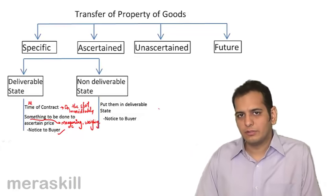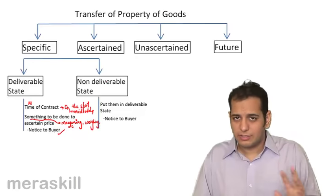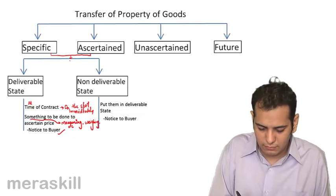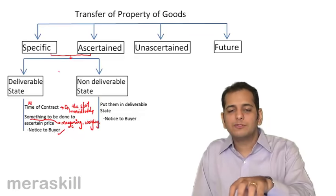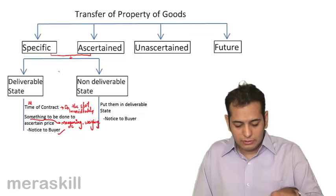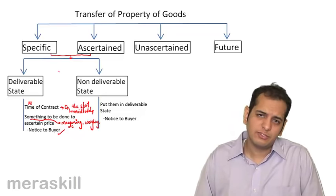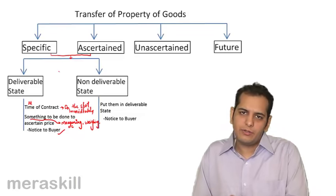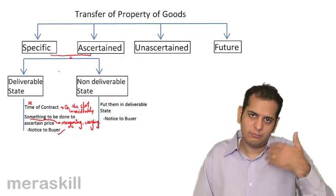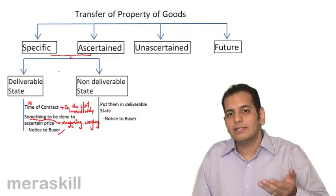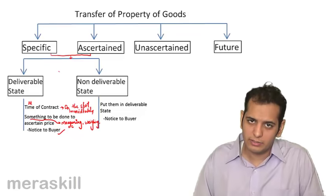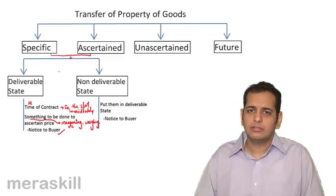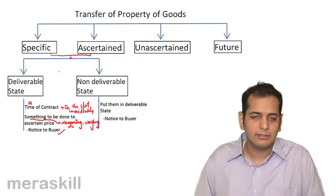This was about specific goods, and the same rules apply to ascertained goods. Whether specific or ascertained, the goods may be in deliverable state or not. If in deliverable state, property transfers immediately. If not in deliverable state, the seller makes them ready, gives notice, and then property transfers.